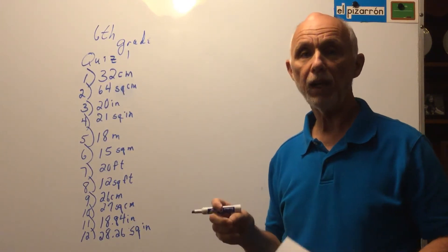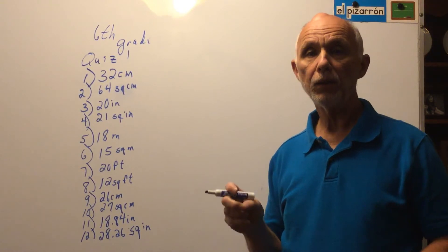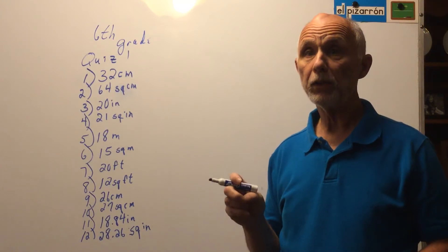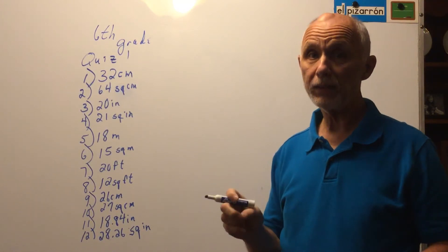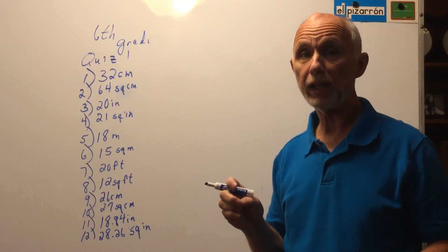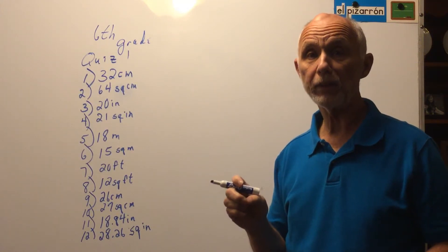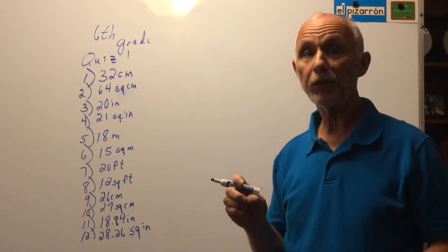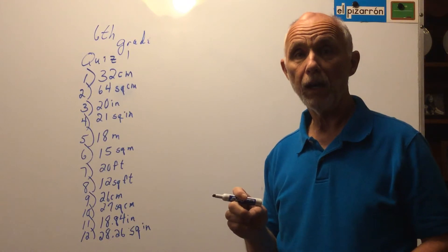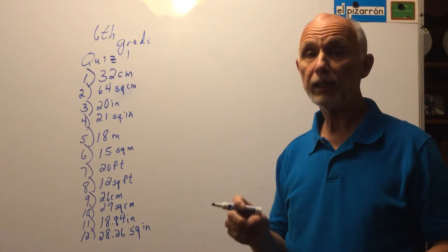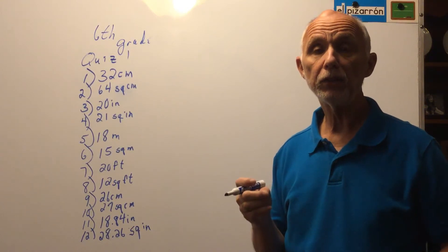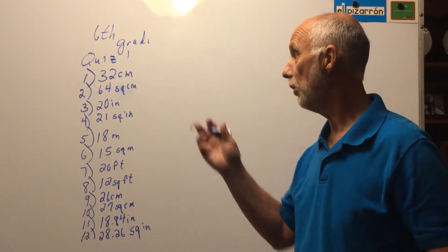To do these, there are three things you need to know. Number one: you need to know the formula, and you have to write the formula. Number two: you need to know what the variables stand for and replace each variable with its value. Number three: you need to know the order of operations to work the problem out. If you know those three things, these are very easy — I'm even letting you use a calculator for the computation.